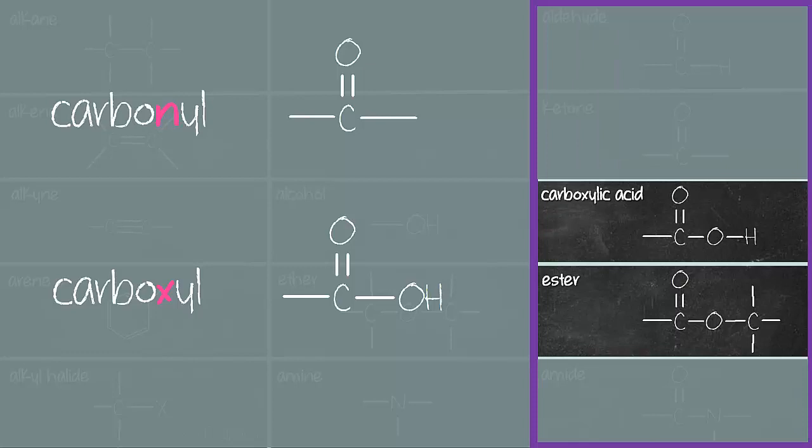Next we have carboxylic acid and ester. What's the difference between these two? Well, the difference is that carboxyl group is present in carboxylic acid and that H in carboxylic acid is replaced with a C in ester. So functional group for carboxylic acid is COOH. Functional group for ester is C double bond O, OC.